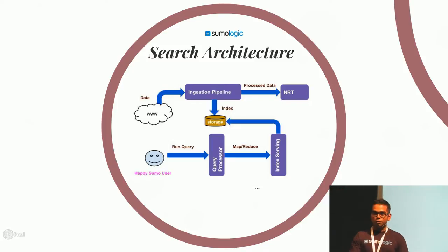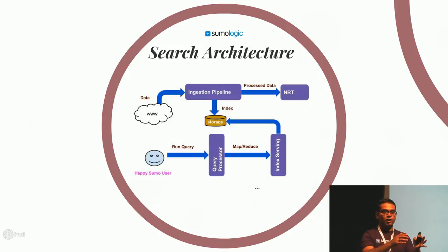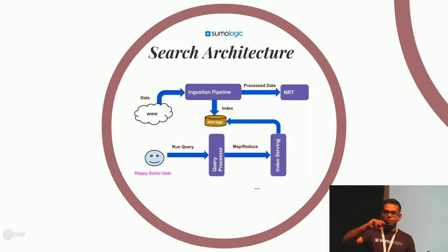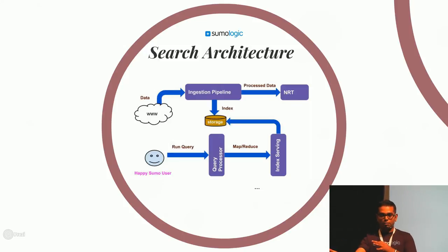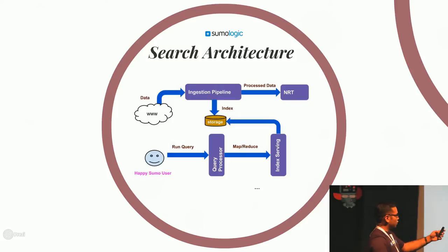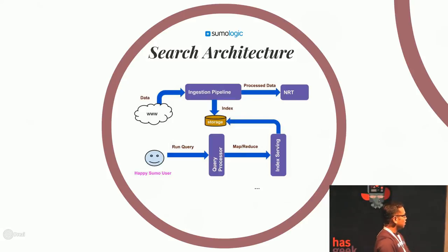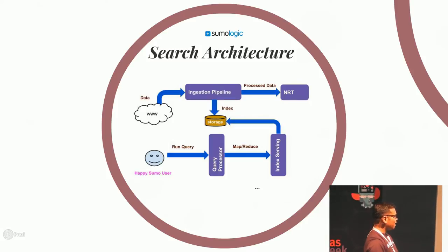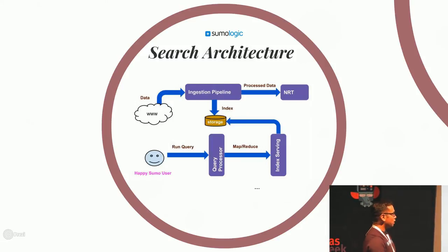An inverted index — for people who don't know — is basically: you have log lines like 'user with ID X logged in.' You extract terms out of those log lines and there is a term-to-document mapping. That's why you call it inverted — you find common terms from all the log lines and do a term-to-document mapping. You generate that and put it in storage. When a user runs a query via the user interface or API, it hits a query processor — a cluster of servers.